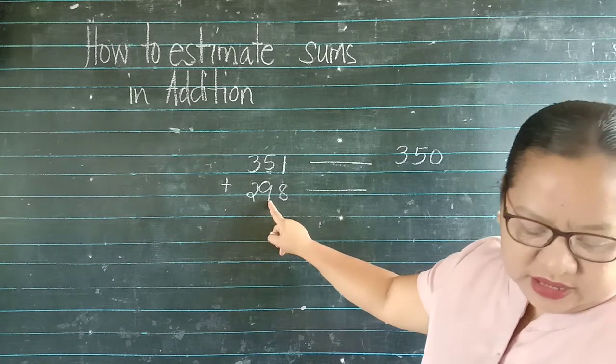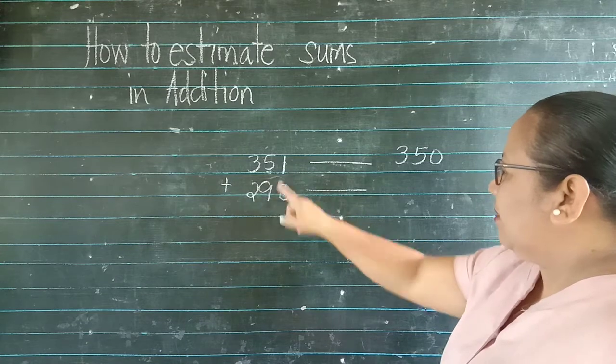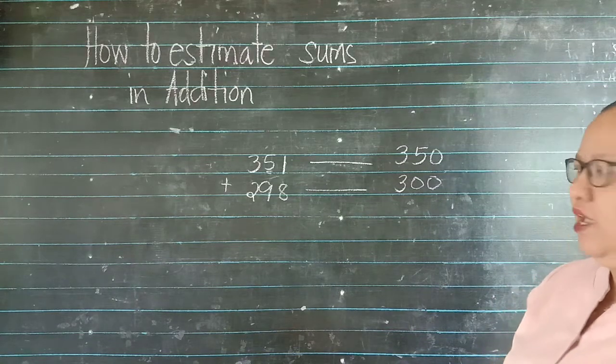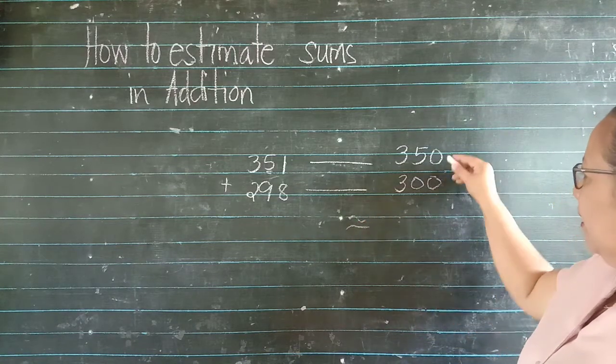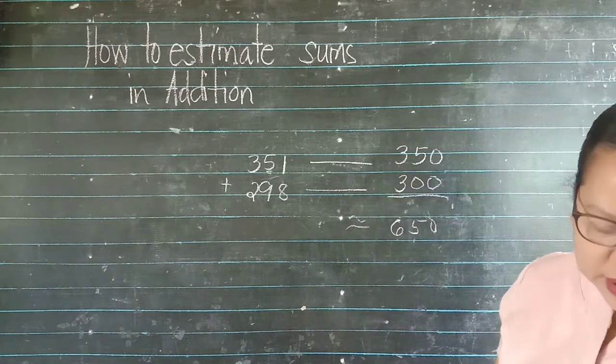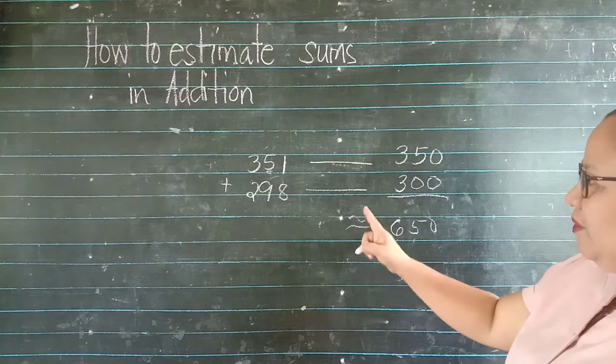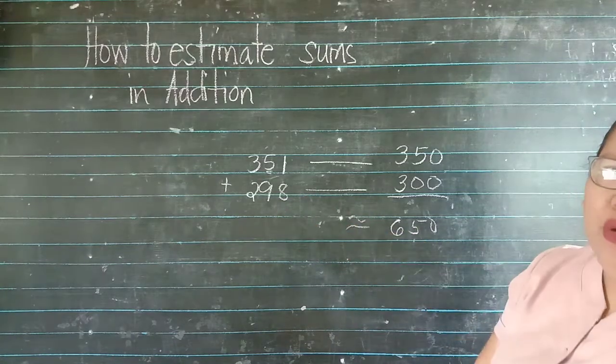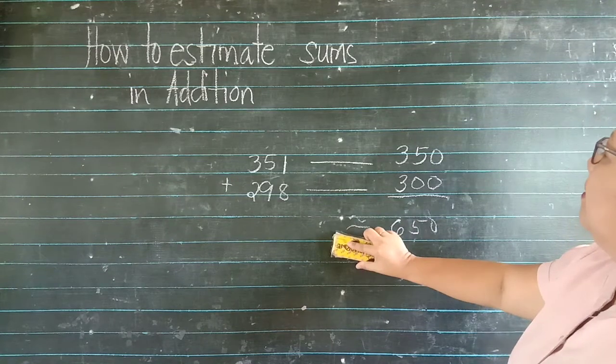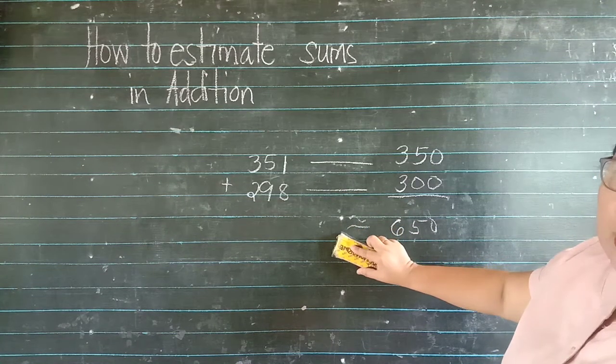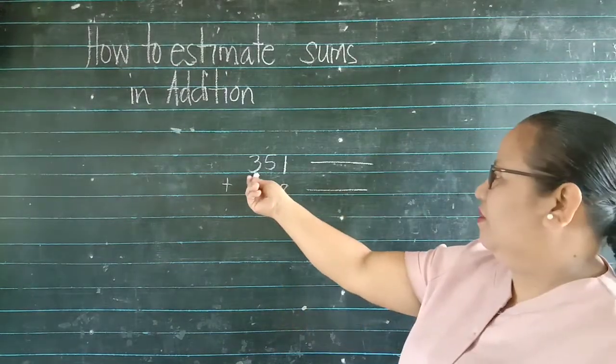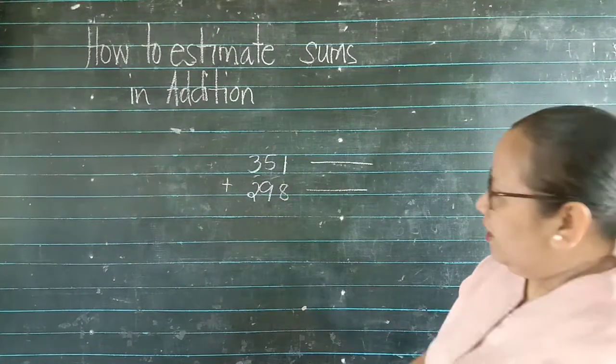This is 350 plus ito, magiging ilan siya? Dahil 8 ang kanyang katabi, magiging 300 din ang kanyang estimate. Ano nga yun yung sum niya? This is 650. Yun po yung kanyang estimated sum to the nearest tens. Paano kung pinapa-estimate siya to the nearest hundreds? Magkakaiba ba ang sagot? Yun pa din? Try natin ha?